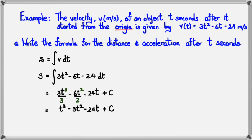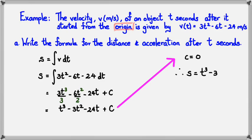We need to find the constant C. Since the object started from the origin, when t = 0, s = 0. Substituting back, C = 0. So the distance formula is s = t³ − 3t² − 24t. For acceleration, we differentiate the velocity function v = 3t² − 6t − 24, giving a = 6t − 6.